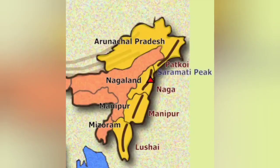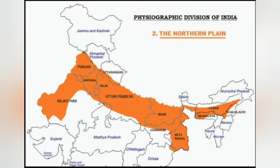The fifth one is Purvanchal Hills. These are the north-eastern Himalayas that run north to south through Arunachal Pradesh, Nagaland, Manipur, Mizoram, Tripura and eastern Assam. The next sub-topic is the Great Plains. The Great Plains of India consist largely of alluvial deposits brought down by rivers originating in the Himalayan and Peninsular regions. They are mainly formed by the alluvial deposits of the Indus, Ganga, Brahmaputra and their tributaries.